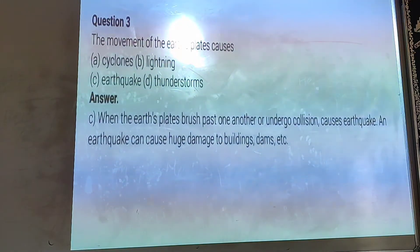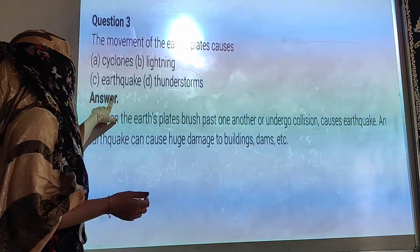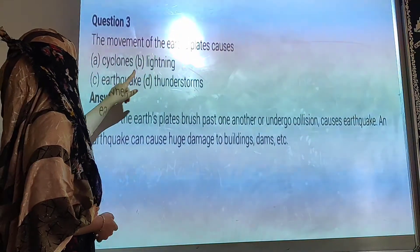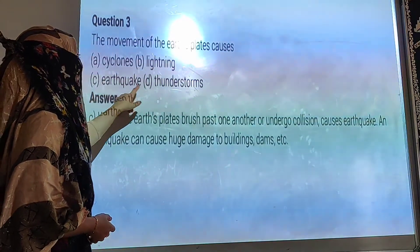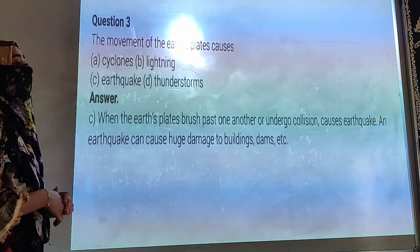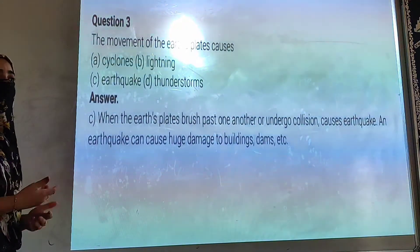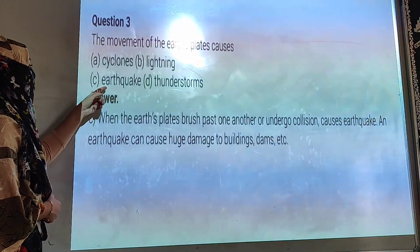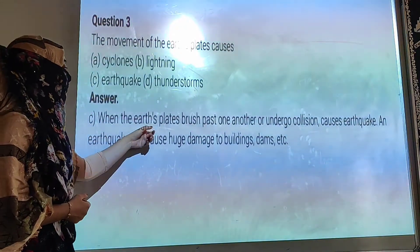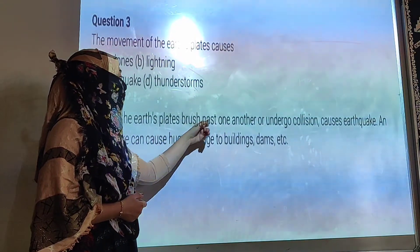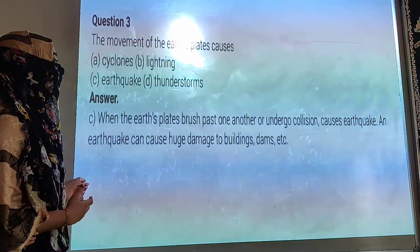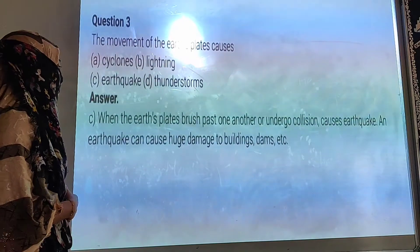Next question: The movement of the Earth's plates causes: A, cyclone; B, lightning; C, earthquake; D, thunderstorms. We know that the movement of Earth's plates can cause an earthquake. When the Earth's plates slide past one another or against one another, it causes an earthquake. So the correct answer is C, earthquake.